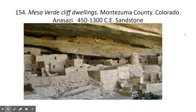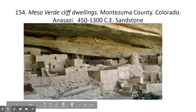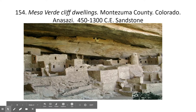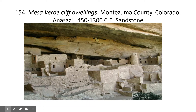So starting with Mesa Verde. We have an image here showing a number of structures that are both residential and ritualistic in significance — mostly residential though, built into a cliff, into the side of a mountain. The living spaces are clearly constructed with stone, specifically sandstone, and mud mortar. You can also see branches used to straighten and solidify the structure, making it more stable.